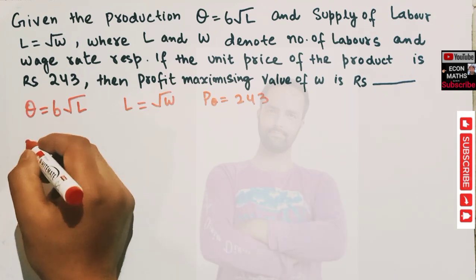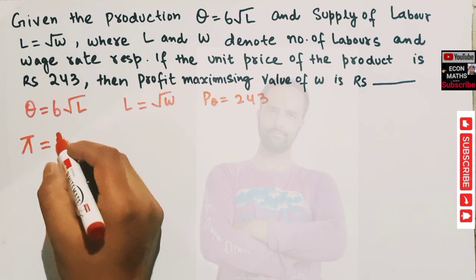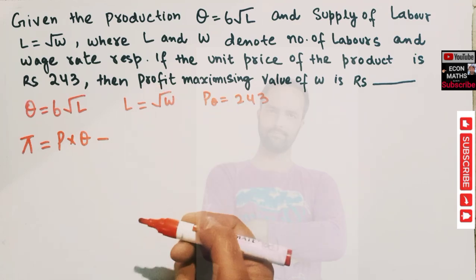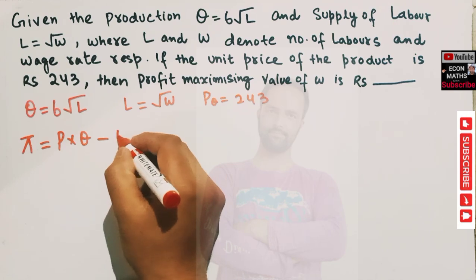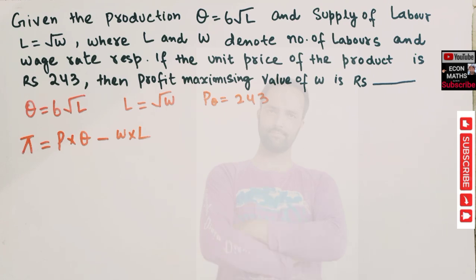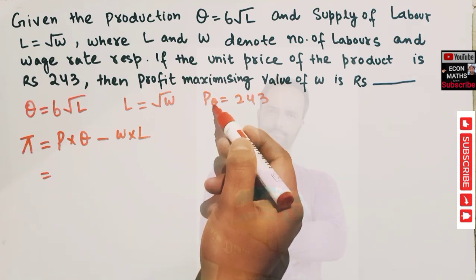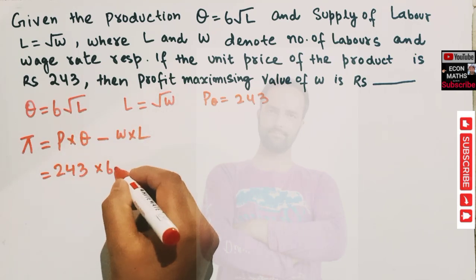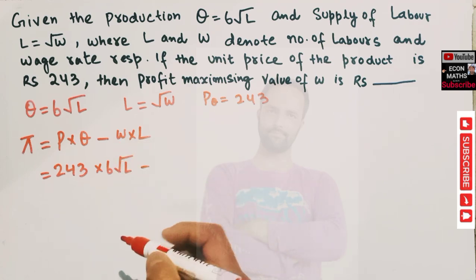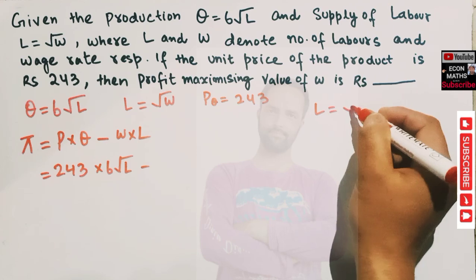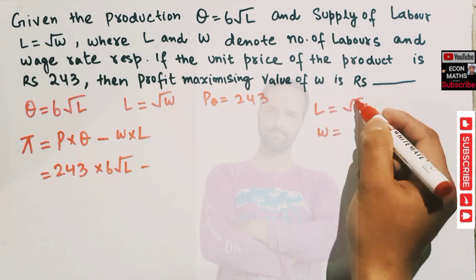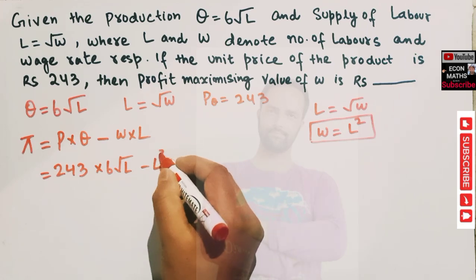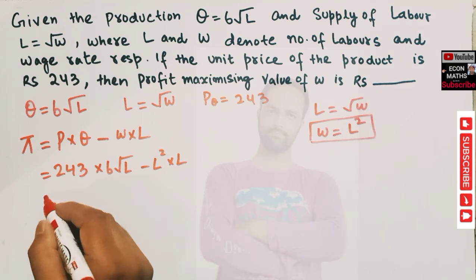Total profit equals total revenue minus total cost. That is: price times output minus wage rate times number of laborers employed. Unit price is 243 and output is 6√L. For total cost, since L = √w, we can write w = L². So total cost is w × L = L² × L.